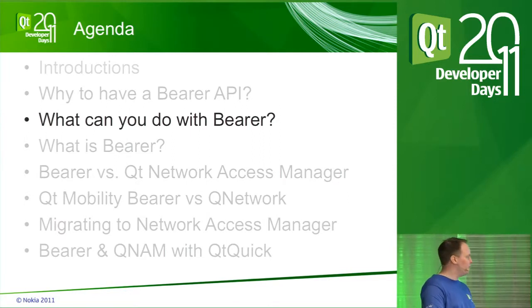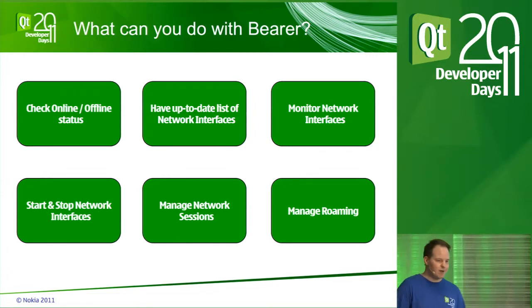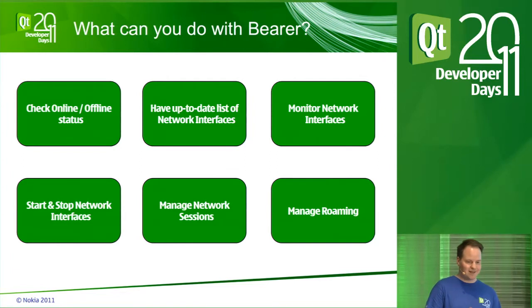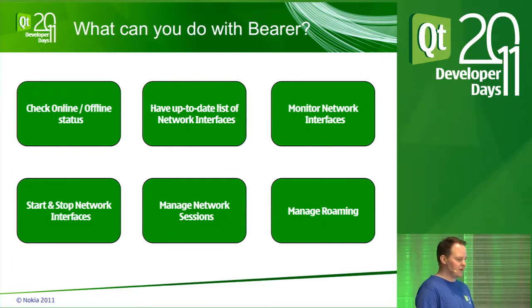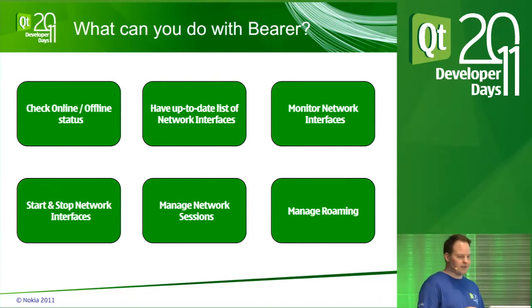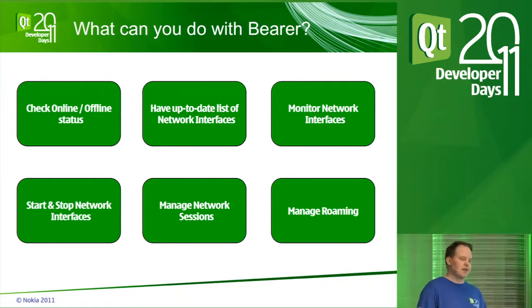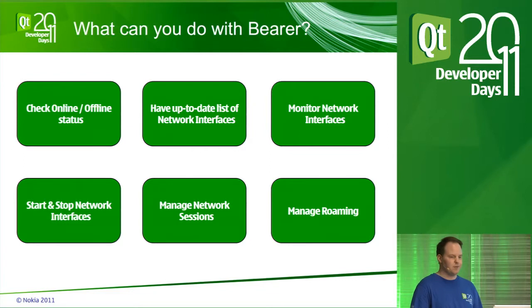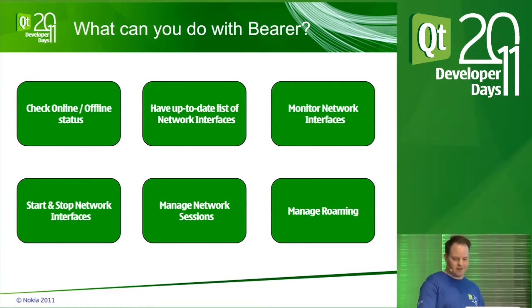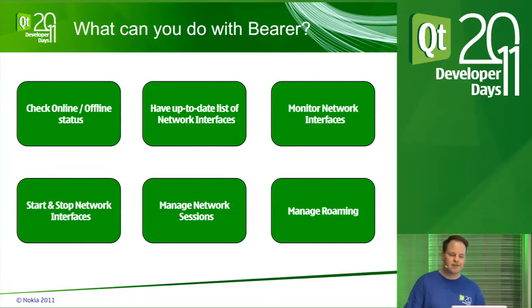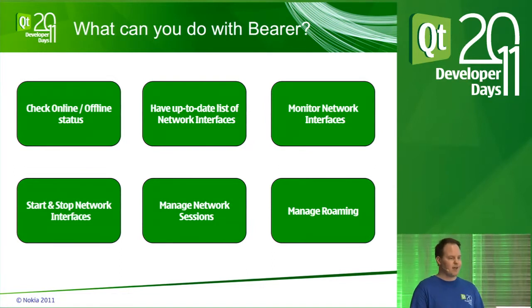Let's check what you can actually do with this API. These are the main use cases: checking online or offline state, having an up-to-date list of network connections available, and on Symbian at least, choosing to connect to any of those if they are in the correct state. You can also monitor what happens on those network interfaces, start and stop those with the right capabilities, and manage network sessions on those interfaces.